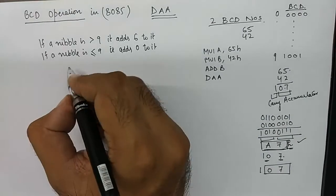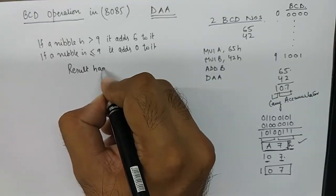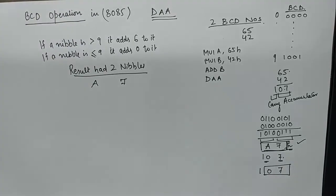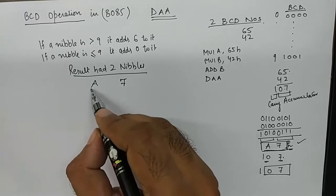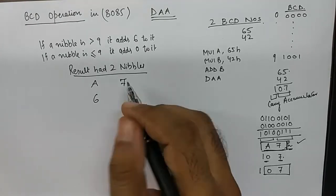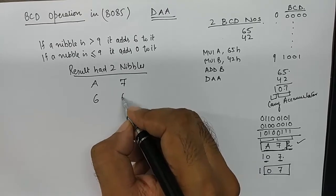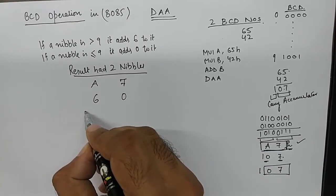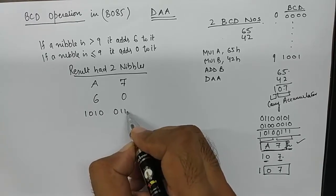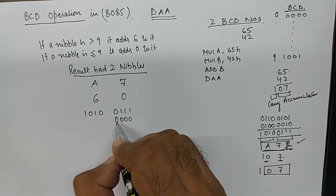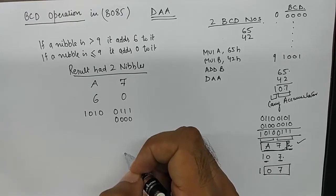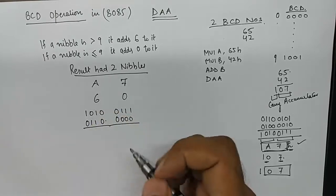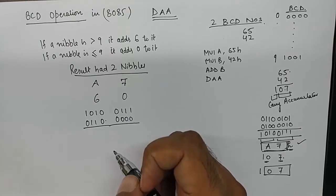Now in this case our result had 2 nibbles A7. It will check for each nibble. This nibble is greater than 9, so it will add 6 to it. This nibble is smaller than 9, so it will add 0 to it. When it does so, it actually performs the result in binary. Adding 0 to 7 would mean adding 0000 to 0111. Adding 6 means adding 0110 to A which is 1010 in binary.